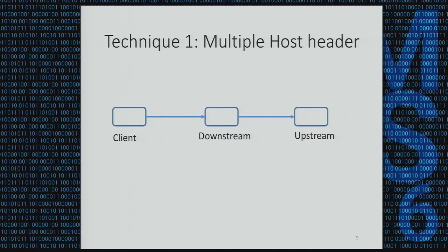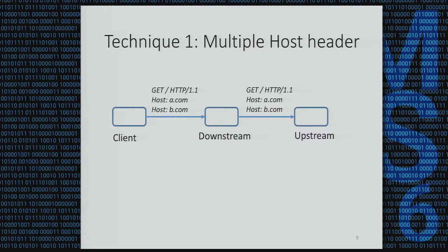We have three techniques for finding ambiguities. The first technique is multiple host headers. We simplify the attack scenario into three parties: client, downstream, and upstream — which can be any two parties in the HTTP processing chain. For example, downstream is the firewall and upstream is the website. A client sends a request with two host headers. Downstream and upstream may have different preferences — for example, downstream prefers the first host header but upstream accepts the last. This inconsistency between downstream and upstream can be exploited.